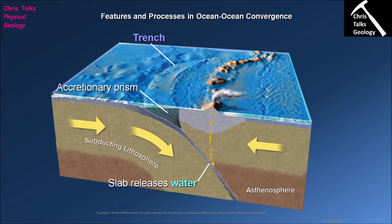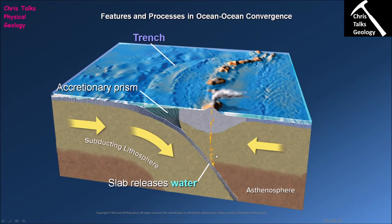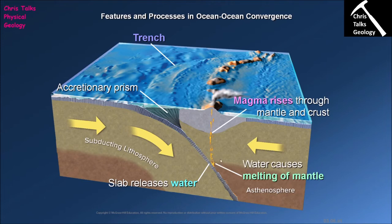The water released during dewatering rises up and enters the mantle. The mantle does not like water, so the addition of water acts as a flux, driving down the melting point of the mantle rocks and causing them to melt. This generates magma, which rises through the mantle and crust. Some of it reaches the Earth's surface, erupting through volcanoes and forming volcanic islands — this is the process that feeds the volcanic island arc.